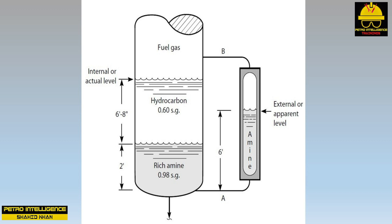At the bottom of the tower there are three phases: fuel gas at 0.01 specific gravity, hydrocarbon liquid at 0.60 specific gravity, and rich amine at 0.98 specific gravity. Because of the location of the level taps on the gauge glass, only the amine is in the glass. The gauge glass simply measures the pressure difference between two points of the tower — points A and B — functioning as a manometer.